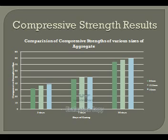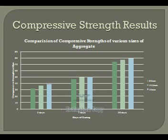The compressive strength results for various sizes of aggregate after 3 days, 7 days, and 28 days of curing are shown in a bar diagram. The green bar indicates 20 mm aggregate, the light blue indicates 10 mm aggregate, and the middle bar indicates 12.5 mm aggregate. From this bar diagram, 10 mm aggregate performs best compared to the other two aggregate sizes.